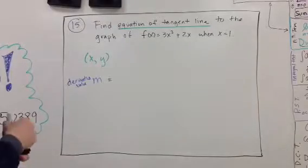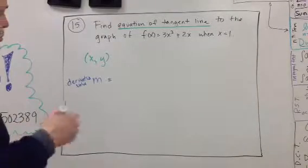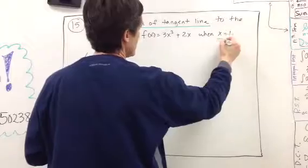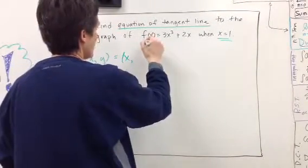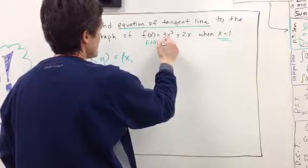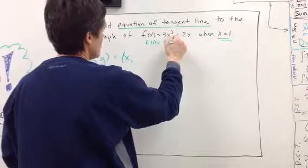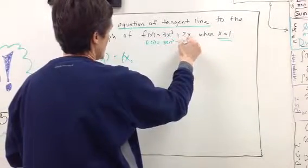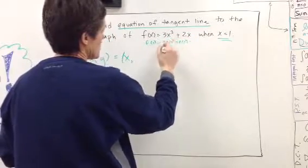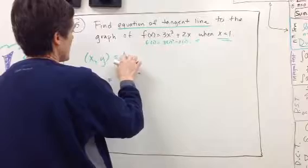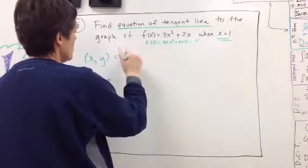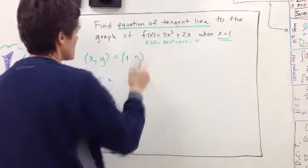First thing is we need a point. When x equals 1, y is 3 times 1 cubed plus 2 times 1. So 3 times 1 cubed is 3, plus 2 is 5. When x equals 1, y equals 5. So there's my point.